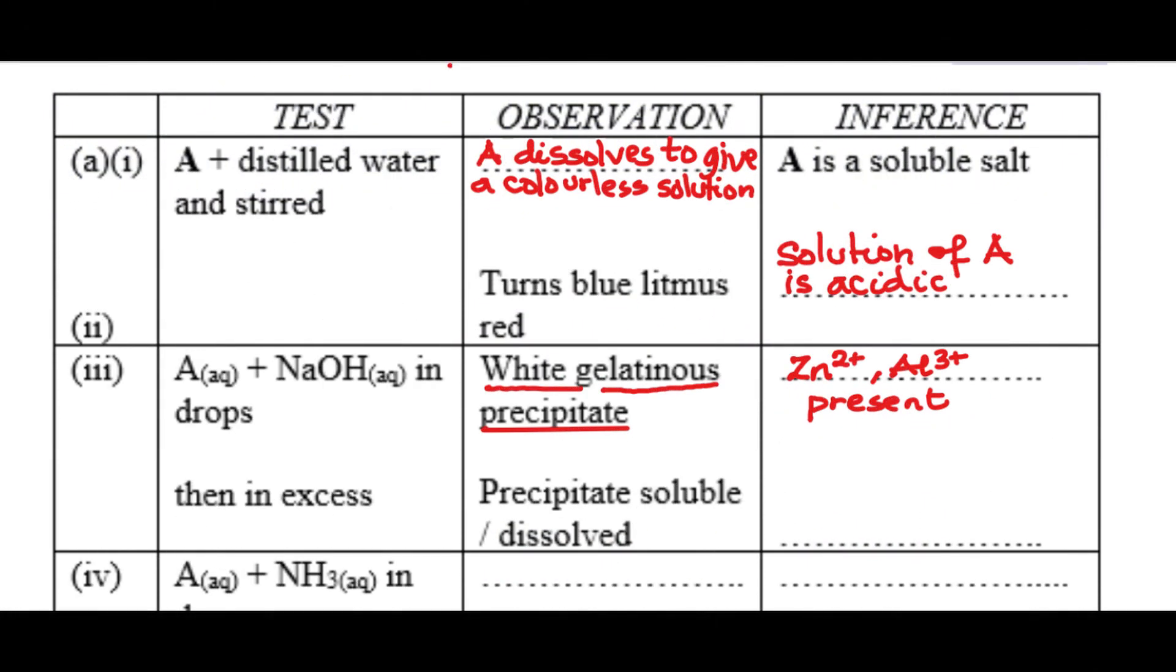So we move to the next step. The next test says then in excess. So what happened here? The white gelatinous precipitate that was formed in drops with sodium hydroxide dissolved or it became soluble when the sodium hydroxide was added in excess. So this confirms that zinc or aluminum ions is present. But note that this is not a confirmatory test for any of these ions. This only shows that the ions present are amphoteric. So the next test with aqueous ammonia will let us know the actual ion that is present.